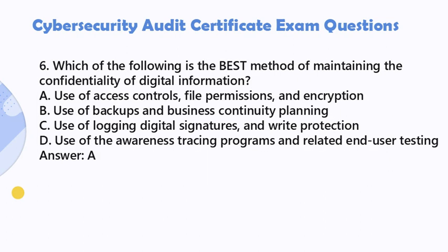Question 6. Which of the following is the best method of maintaining the confidentiality of digital information? A. Use of access controls, file permissions, and encryption. B. Use of backups and business continuity planning. C. Use of logging, digital signatures, and write protection. D. Use of awareness training programs and related end-user testing. Answer: A.